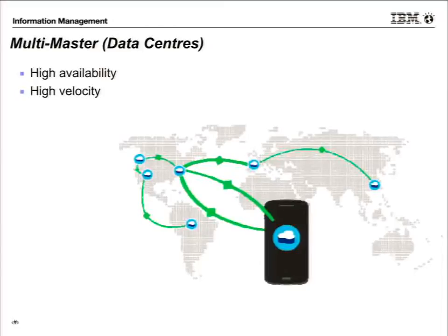Here we show how data center replication works. We're eventually consistent, not consistent. According to the CAP theorem, we picked partition tolerance and availability for CouchDB. I have high availability and can handle a high velocity of input data. I'm writing into the east coast from my mobile device. It replicates to the west, to the south, down to South America, across to Europe via Akamai, and then to Russia.